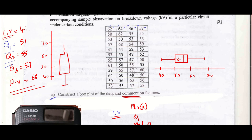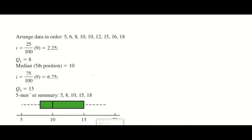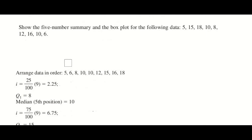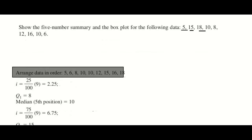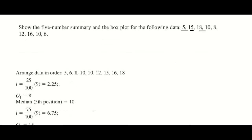The next thing in this video: they are asking you to find the five number summary and make the box plot. They have given numbers like 5, 15, etc. The first thing to do is arrange the data. Never forget — arrange the data. Normally this comes as question number 1 and they will expect you to do it in the classical method.